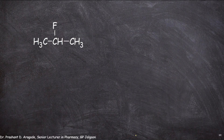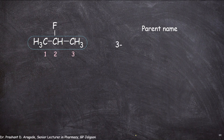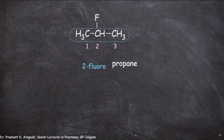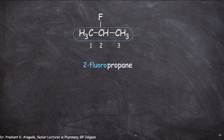Let's name this compound. First, select the longest possible continuous chain, then give the numbering — you can choose either direction. The parent name is propane, as it contains three carbon atoms. The substituent name is fluoro, attached to carbon number 2. So, prefix 2 and add the substituent name onto the parent name. The name of this compound is 2-fluoropropane.